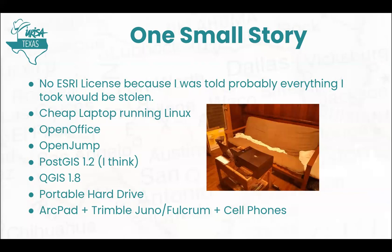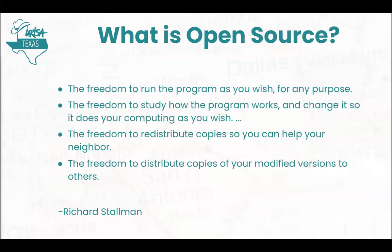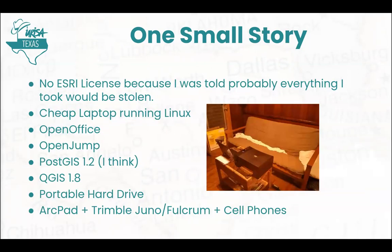We switched to cell phones because everybody had a cell phone, and it made it a lot easier. What I learned from all of that was that I could actually create data and not use a commercial license, not use an Esri license to create shapefiles, spatial SQLite databases running with PostGIS. I could connect remotely to stuff — it really kind of opened my eyes up a little bit. Through all of that mess, I found that I really didn't enjoy Open Jump very much.